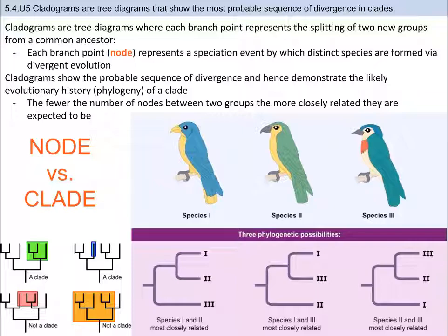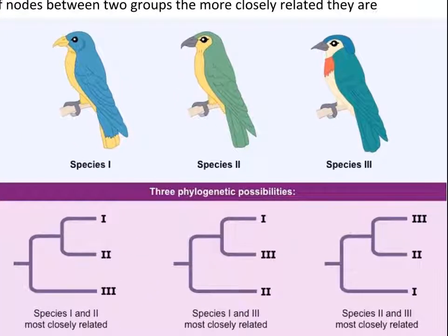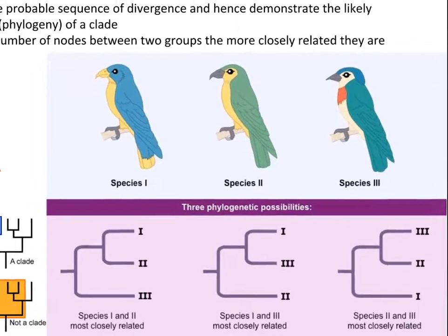In the example, we have three bird species. These species are related, and you can see the possible relationships in the three cladograms. But how do we know which one is most likely the correct cladogram? We need to gather evidence and clues, tying this back to topic 5.1: the evidence for evolution. Phylogeneticists use fossil records, comparative anatomy, embryology, and DNA to deduce the best possible cladogram. In the old days, this took a lot of time and effort, with little DNA evidence and slow computers. Now, much of the information is fed into computers that analyze the biological data to create cladograms.